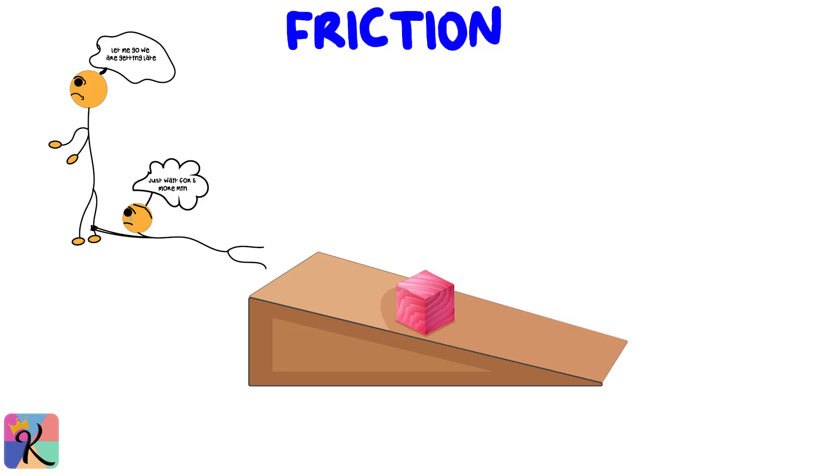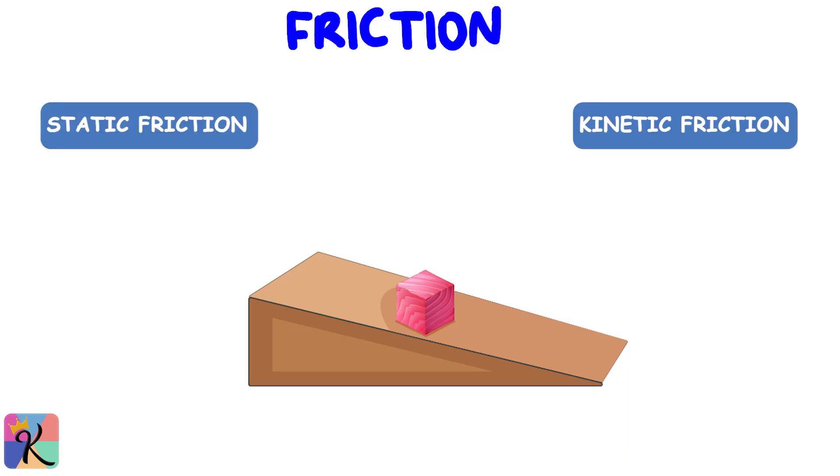Now friction is like that friend who always tries to slow you down. On an inclined plane, there are two types of friction you should know about: static friction and kinetic friction. Static friction, represented as Fs, keeps the block from moving when it's just sitting there. It adjusts to match the force pulling the block down the ramp until it reaches a maximum value.